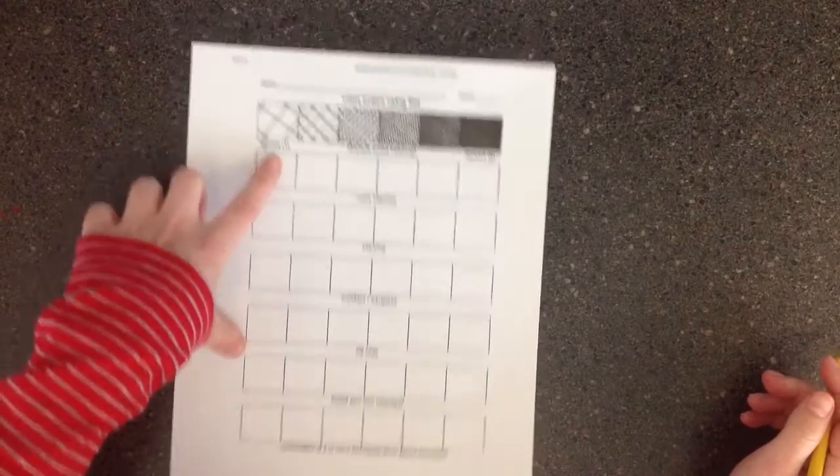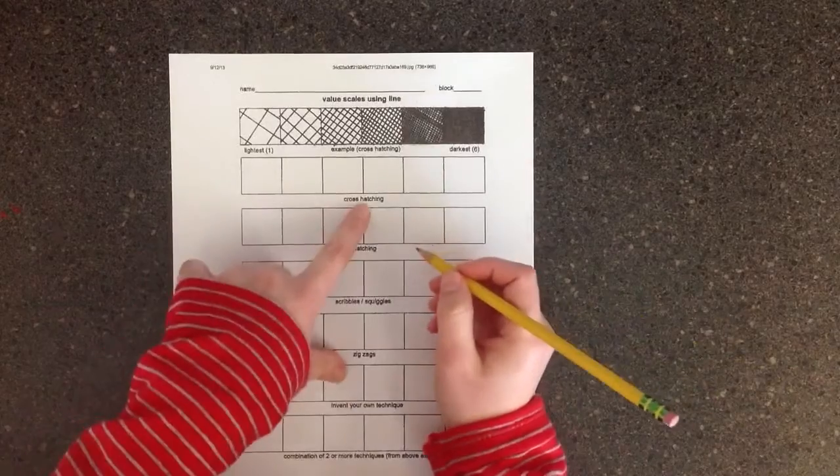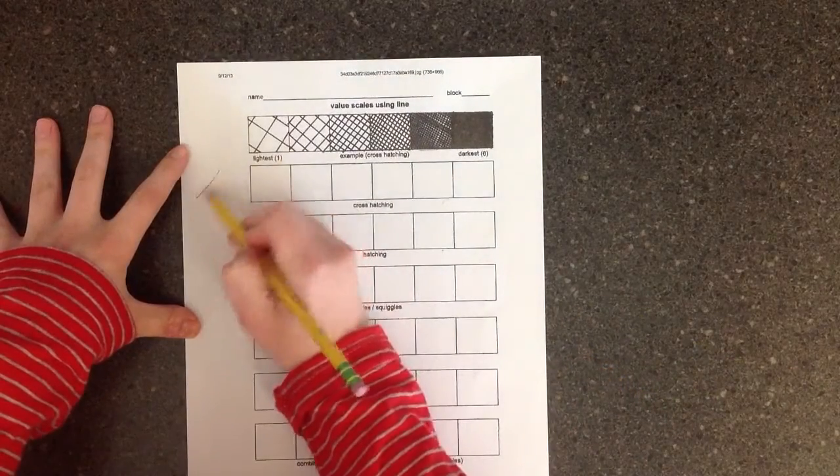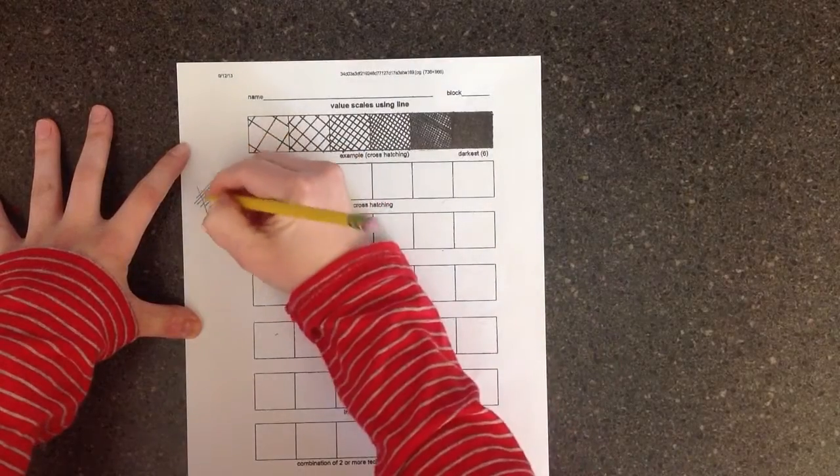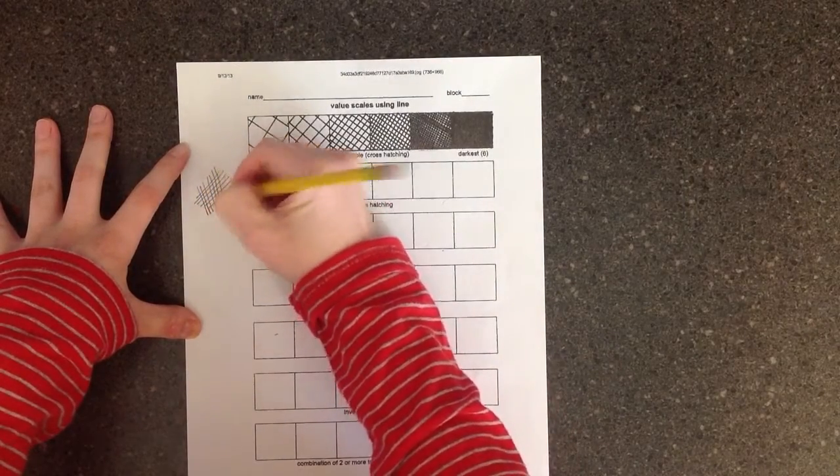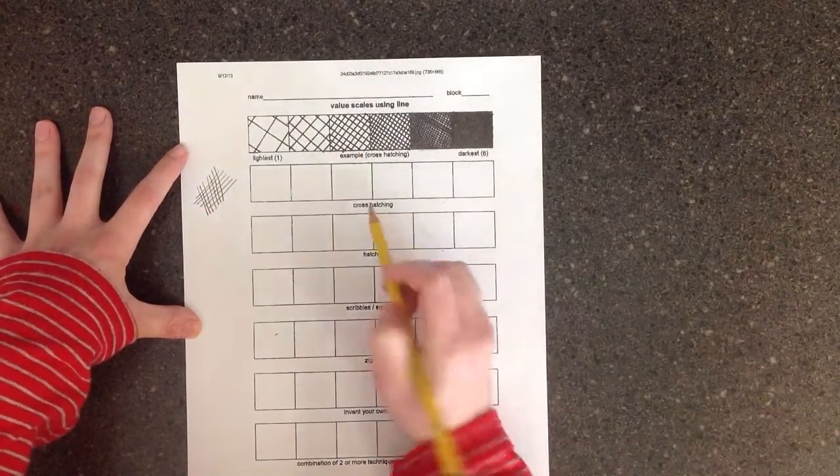So for this first one, it's going to be cross-hatching. All cross-hatching means is that you do one set of lines one way and another set of lines the other way. That's cross-hatching.